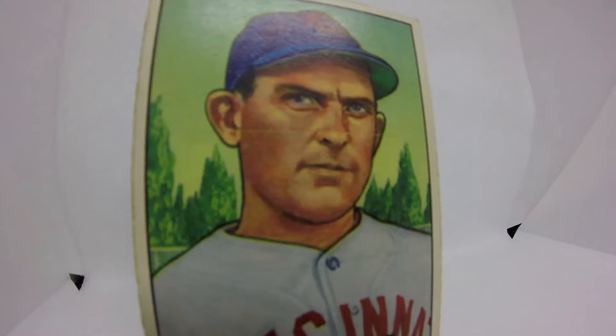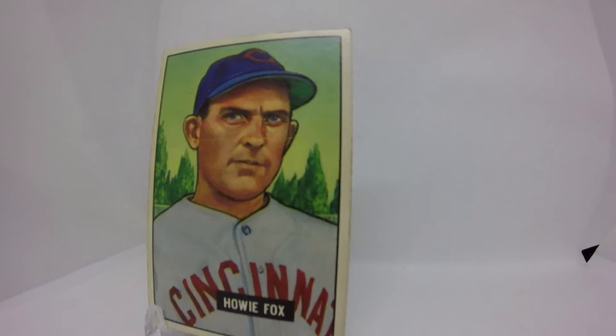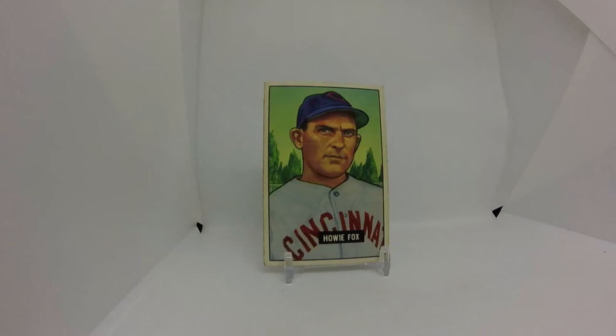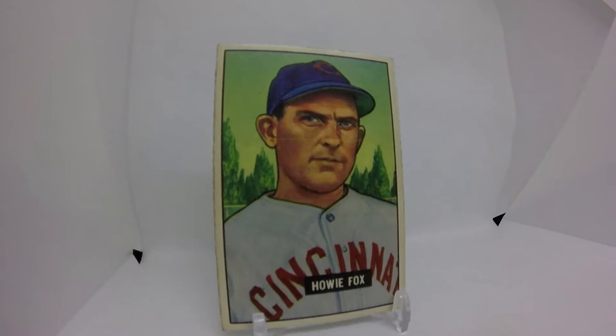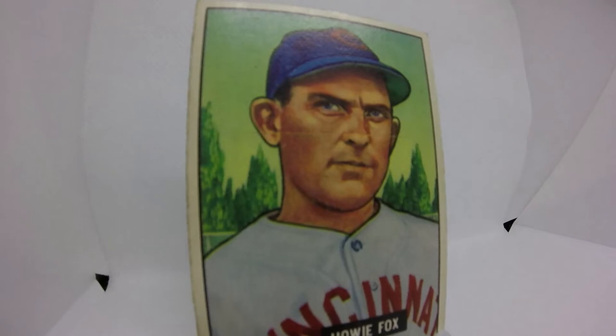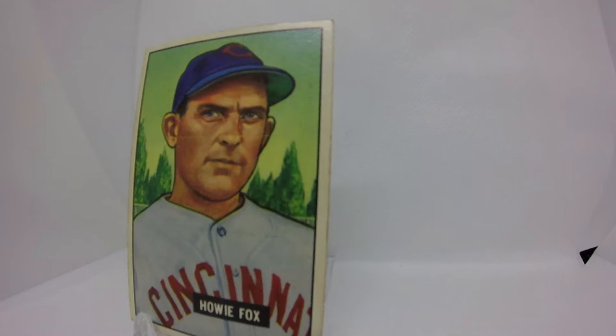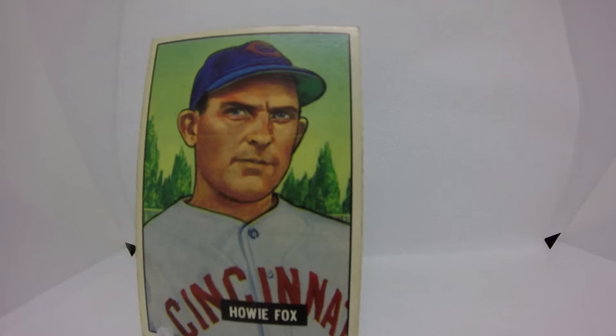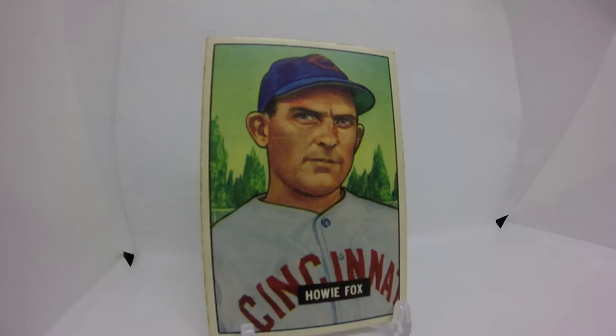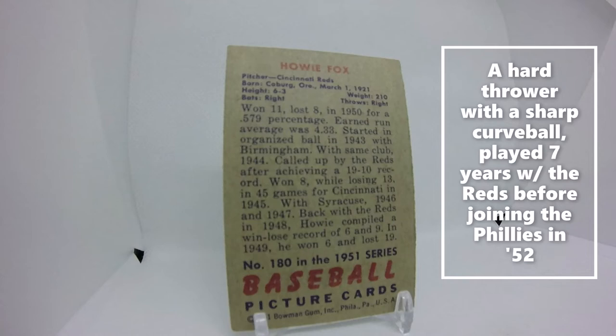Howie Fox was a right-handed pitcher, born March 1st, 1921 in Coburg, Oregon — about 10 miles from Eugene, with a population of only 270. He was 6th of 9 kids, and all 7 brothers actually played basketball for the local high school. We've been hearing a lot about these Pacific Northwestern baseball players who also played basketball.